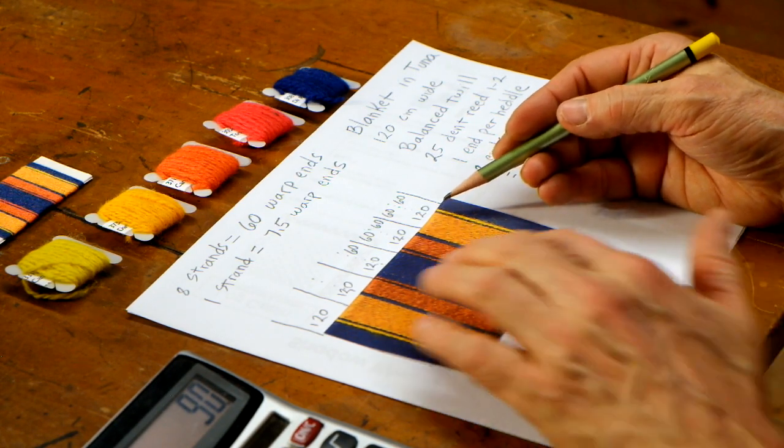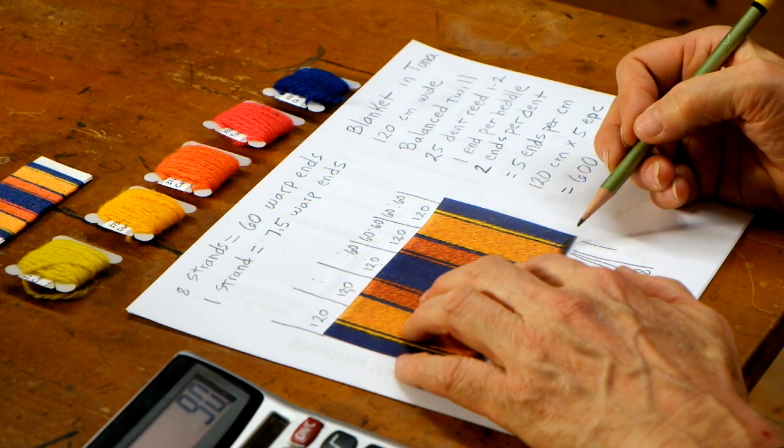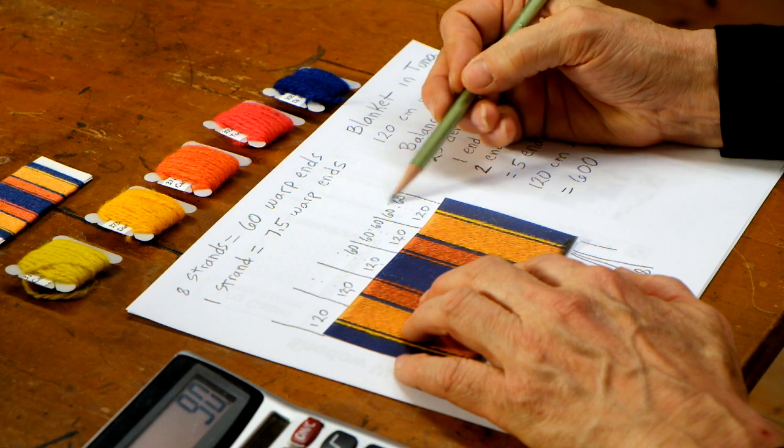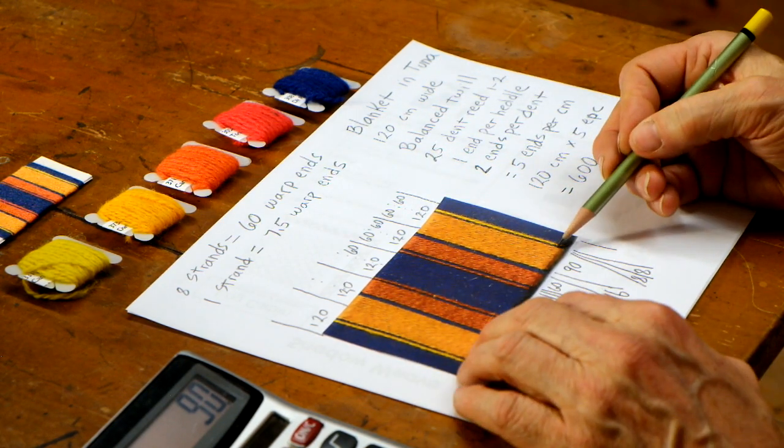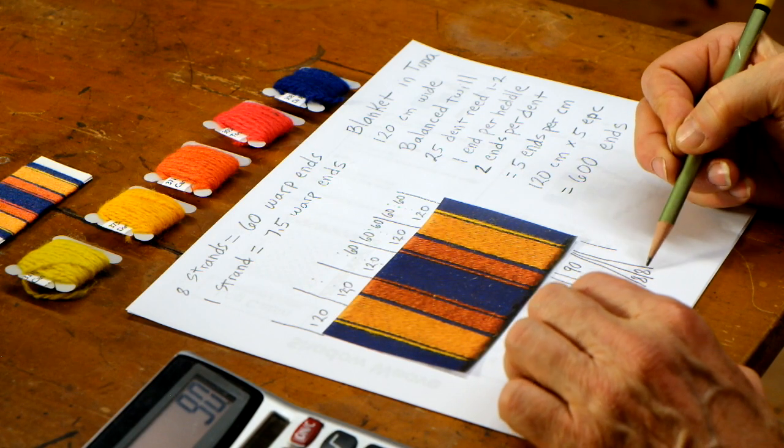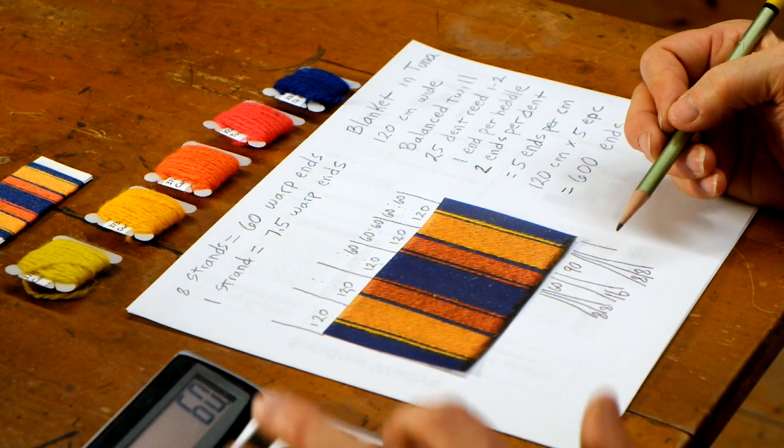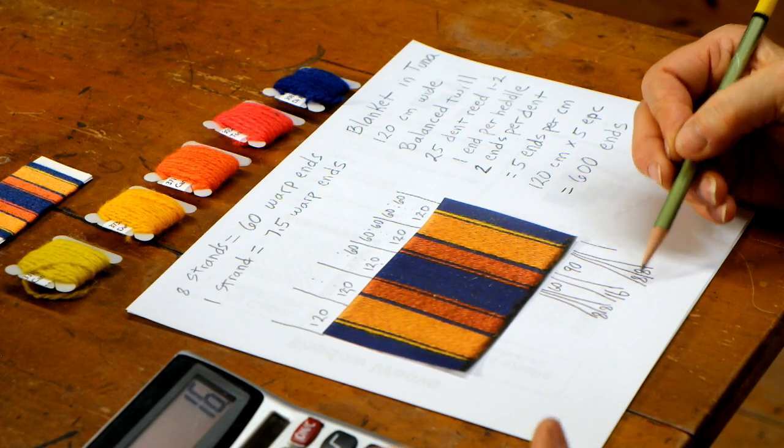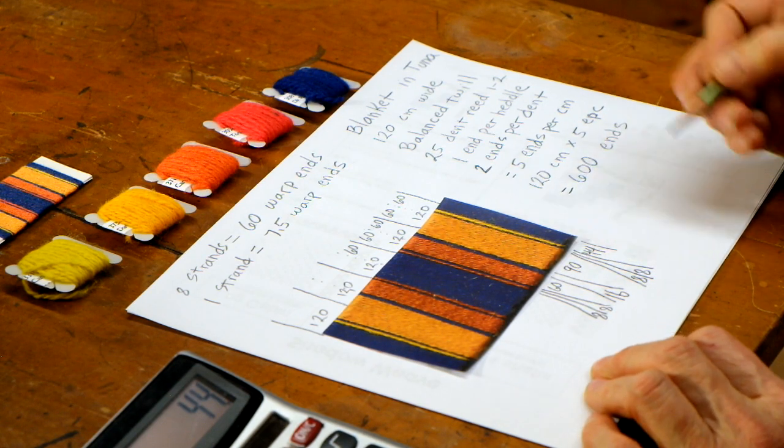And then this section here, from this purple over to that purple, I'm seeing this line up with another 60 right over here. So 60 from this purple to that purple. We've already taken out eight for the gold, eight for the purple. So if I take 60 and I subtract these 16, I get 44 for that purple stripe.